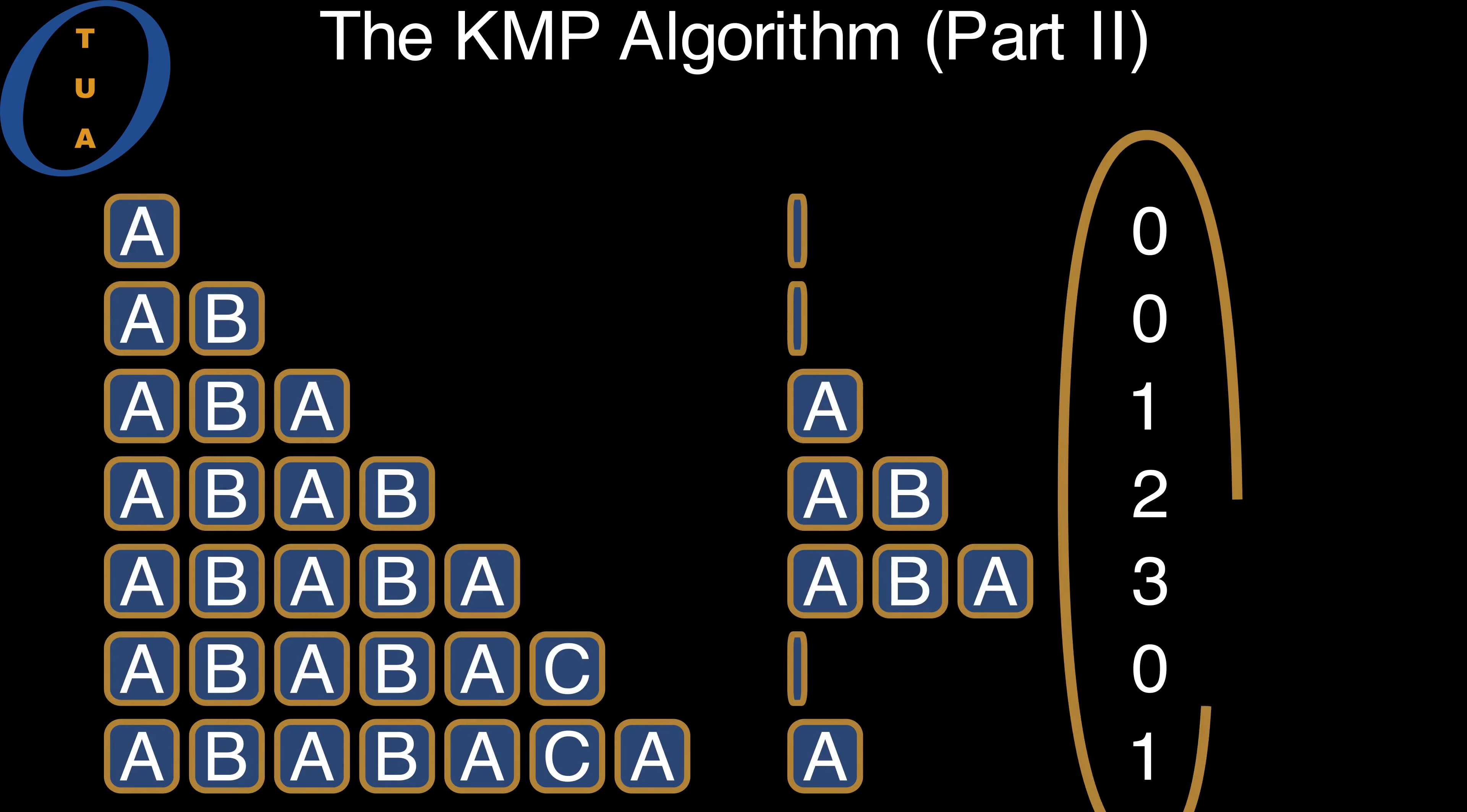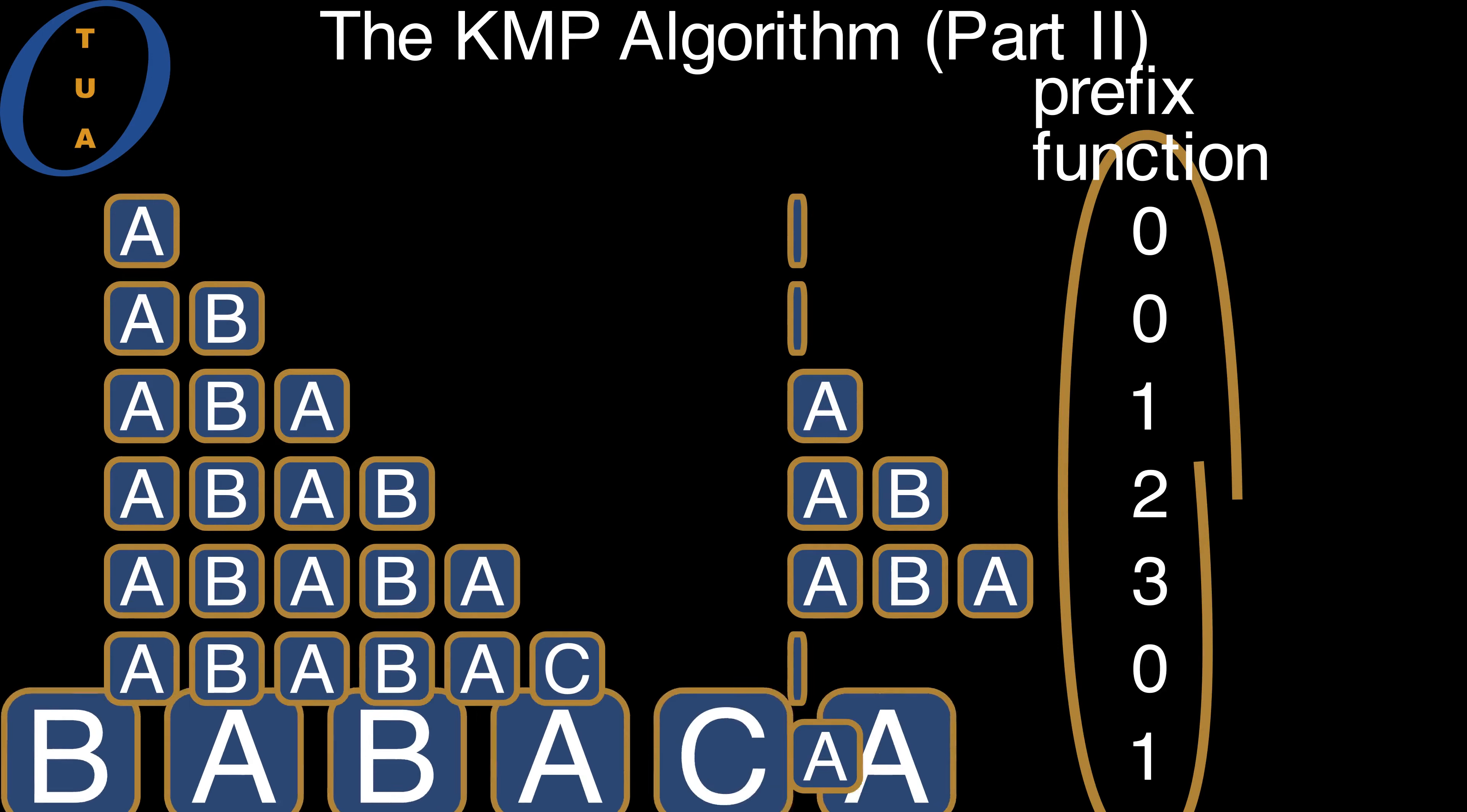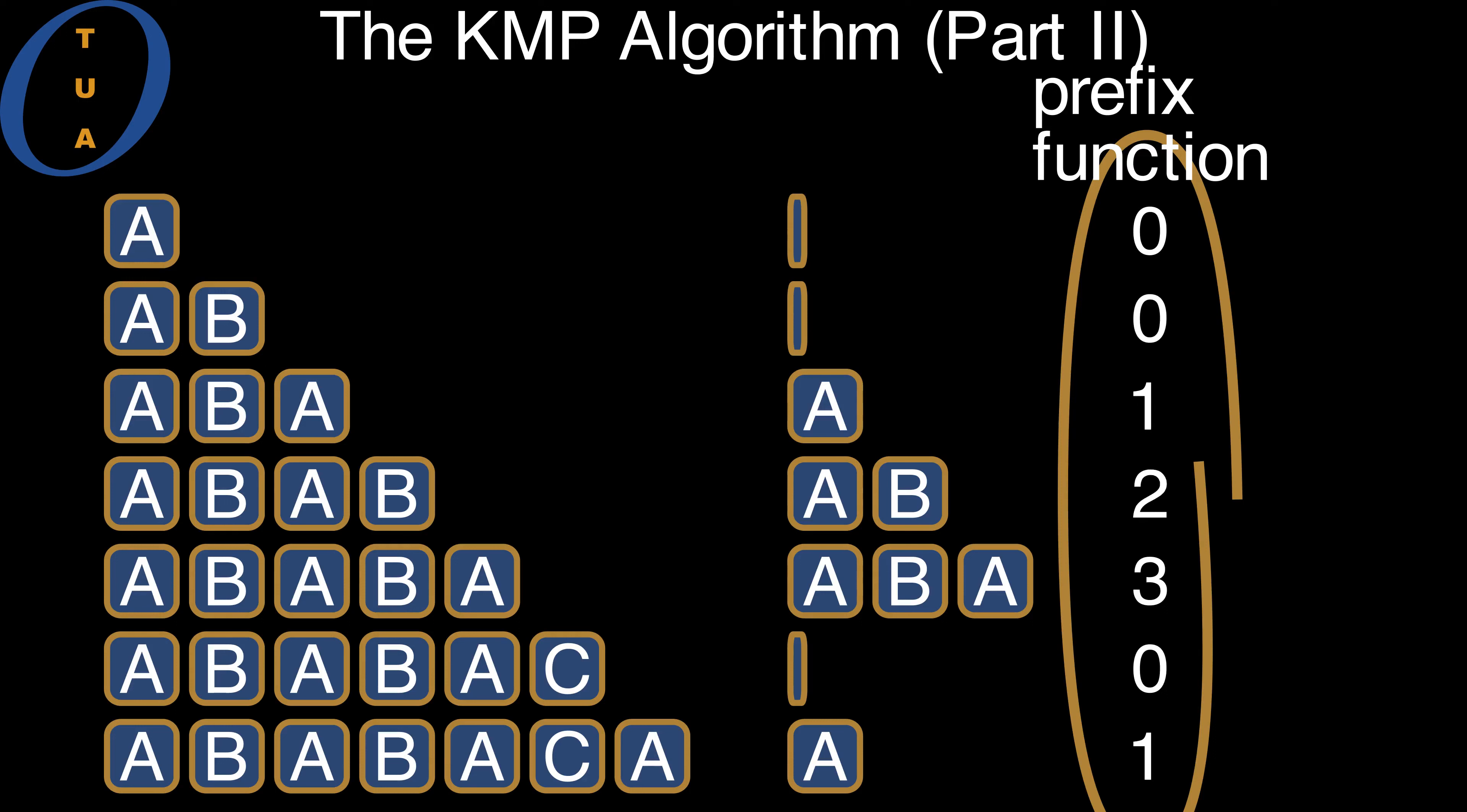The array is called the failure function, because it tells KMP what to do when a comparison fails. Some other people might call it the prefix function. In any case, it stores the same information. For every prefix of the pattern, the length of its longest proper border.